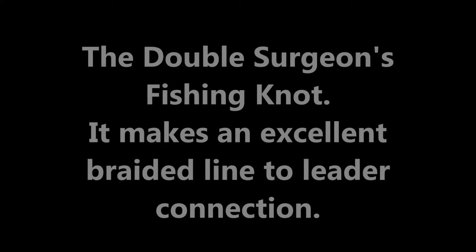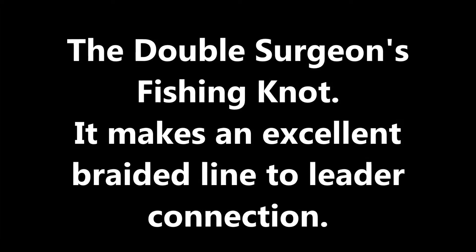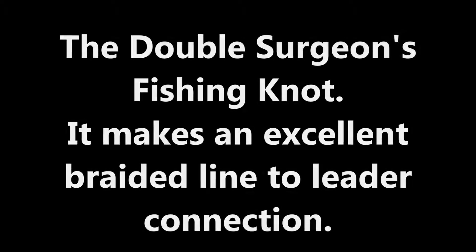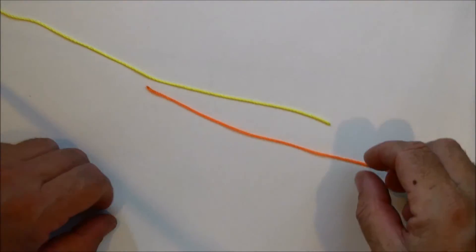This is the double surgeon's fishing knot. It makes an excellent braided line to leader connection. In the video I'm using colored lines so you can easily see the knot as it's tied. The yellow line would be your braided line and the orange line would be your fluorocarbon leader.